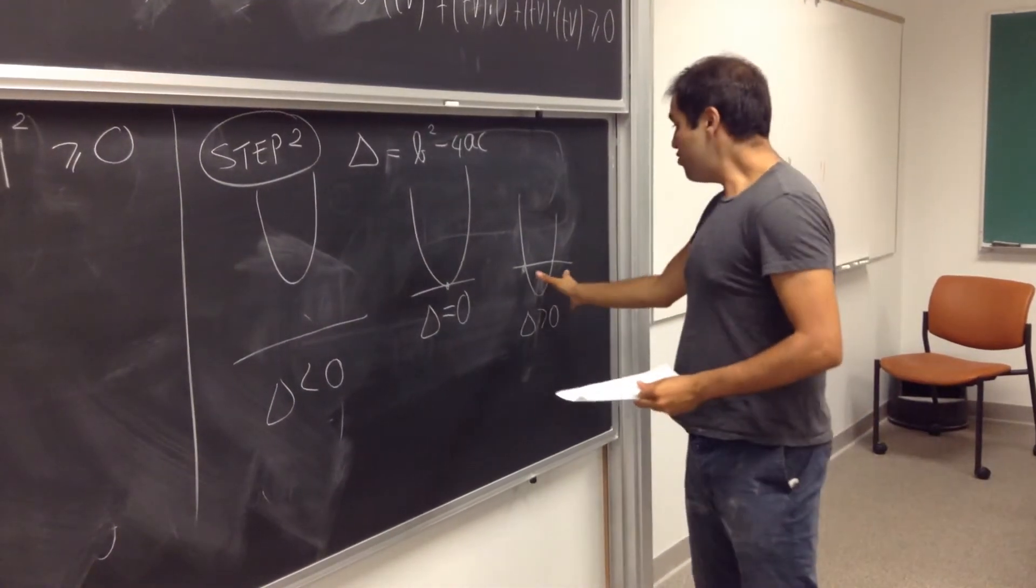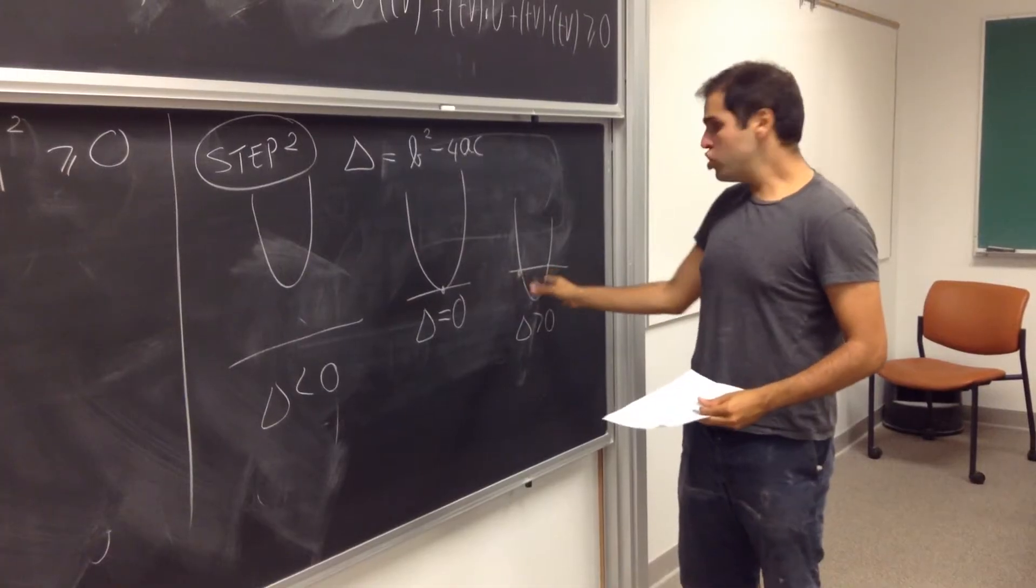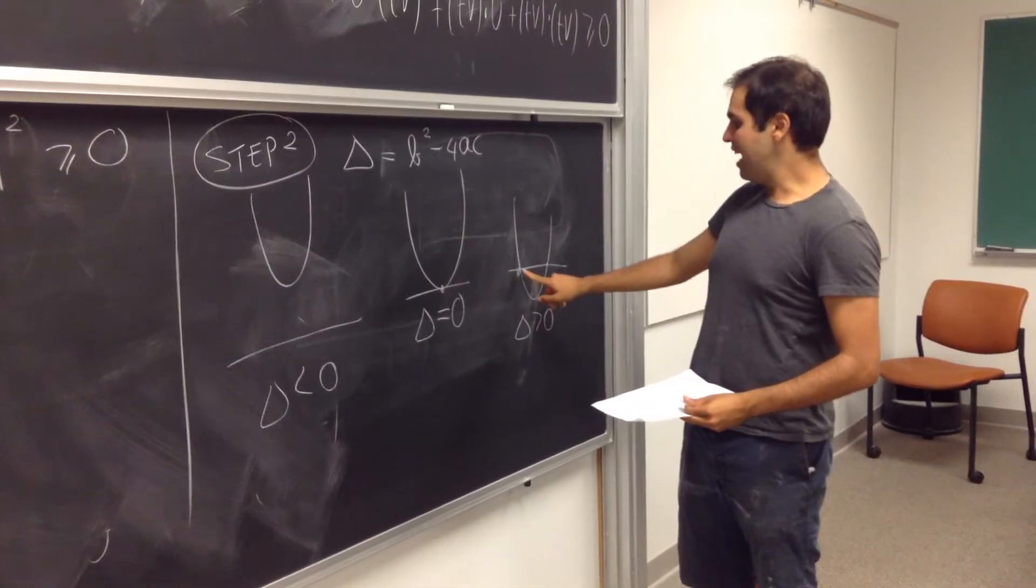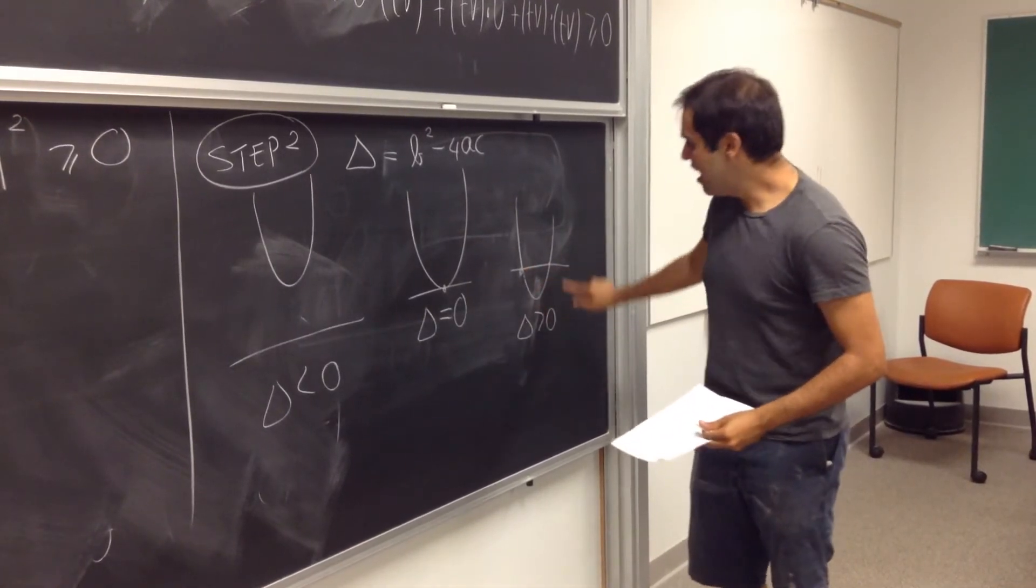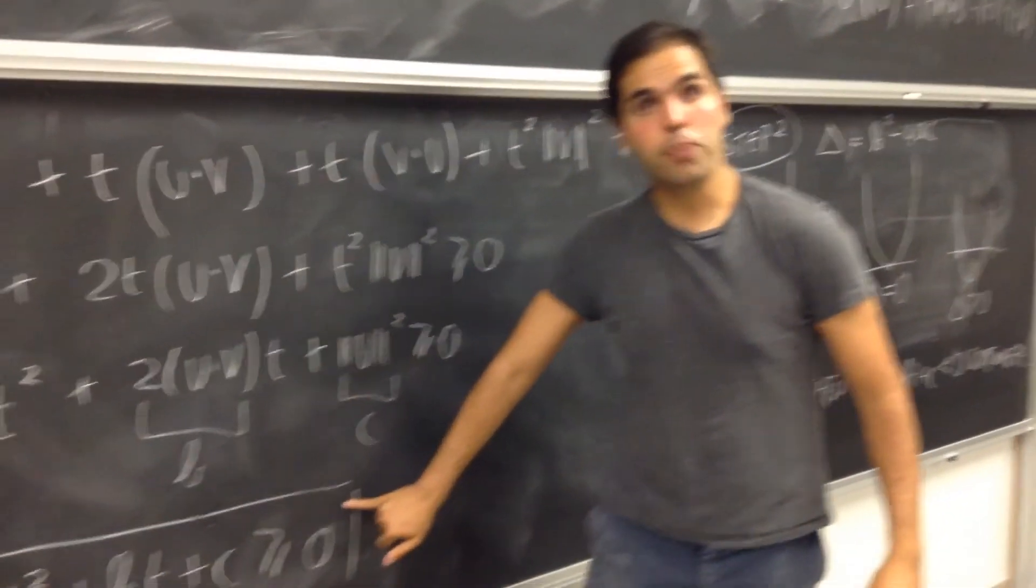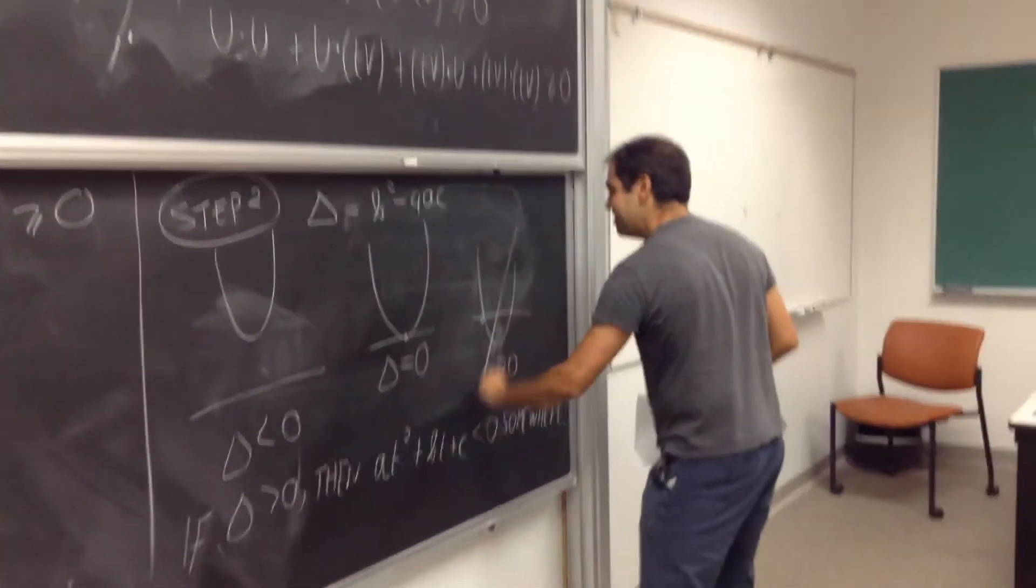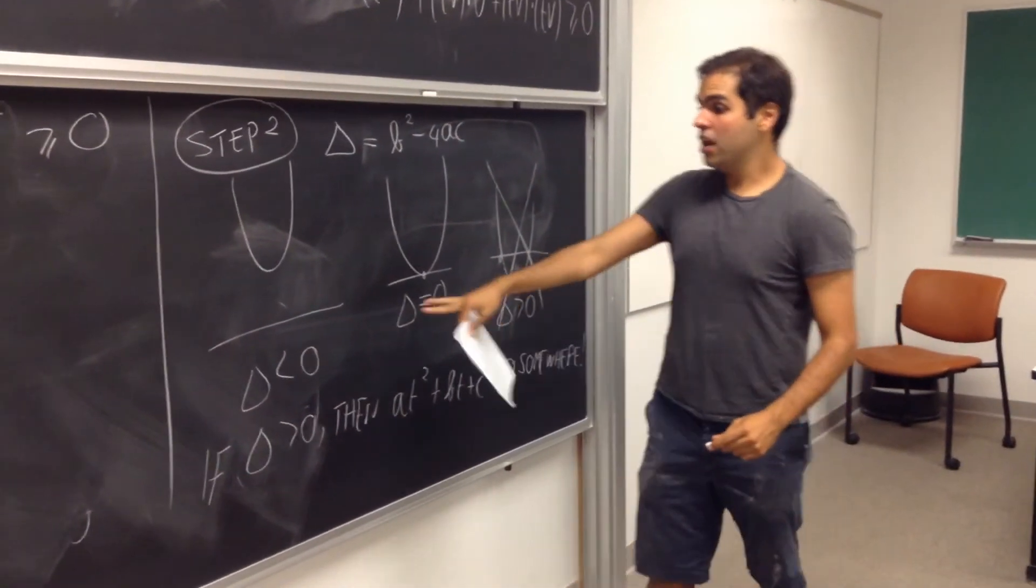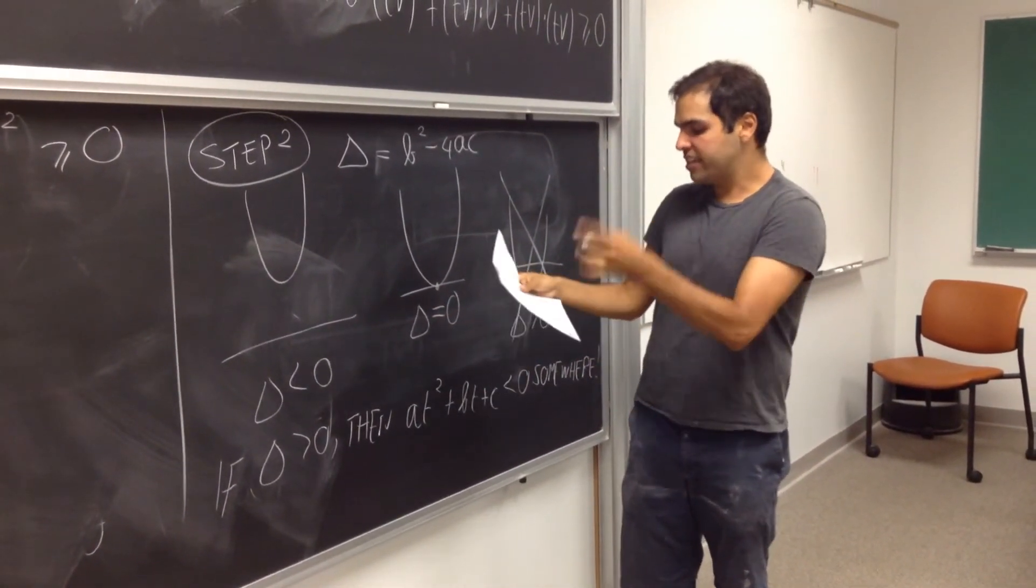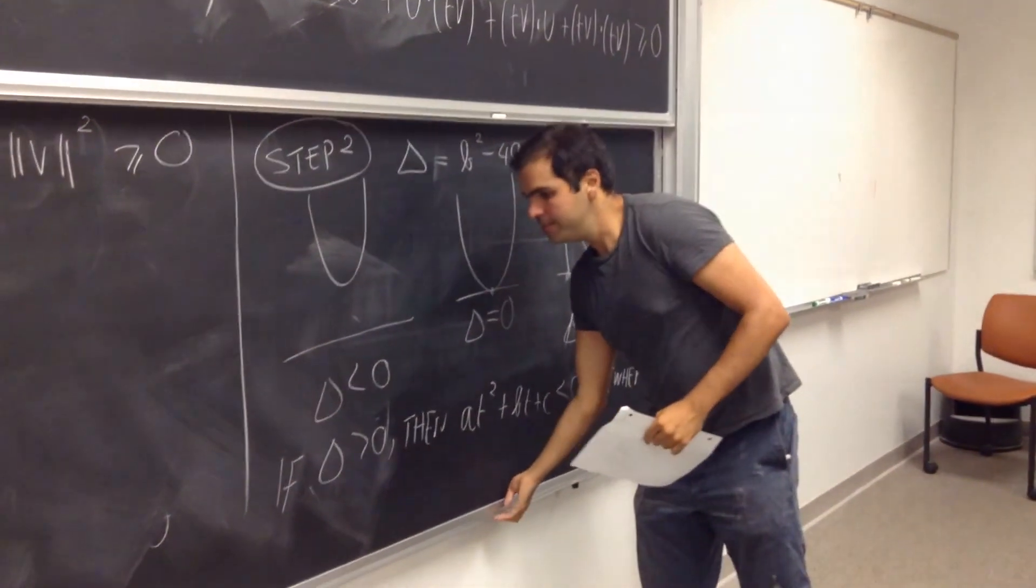But look. If we're in this case and the polynomial has two roots, it means that for sure, somewhere it has to be, the polynomial has to be negative. Because it has to cross the x-axis and it has to be negative somewhere. But this is not what we have here. We know that this polynomial is always non-negative. Which means that, really, this last case does not happen here. And we're either in the first case or the second case. So one thing we know is that the discriminant has to be less than or equal to zero.